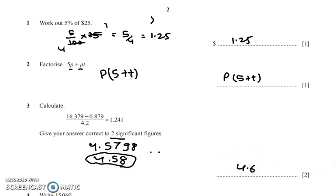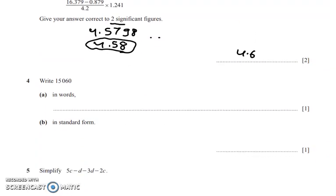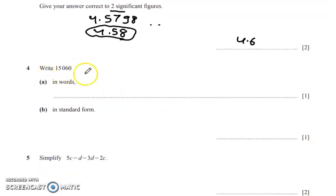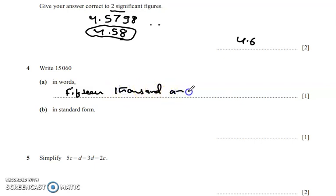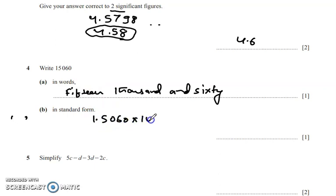Next question: write 15,060 in standard form. Standard form requires the number to be between 1 and 9. So we write 1.506 × 10⁴, because the decimal point jumps four places. We can neglect the trailing zero, so the answer is 1.506 × 10⁴.